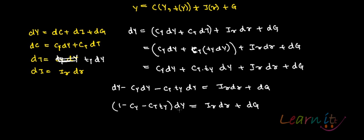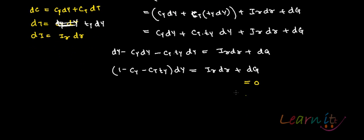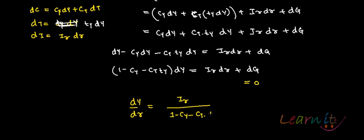Now, to find how y changes when r changes, set dG = 0. What remains is (1 - C_y - C_t·t_y) dy = I_r dr, so dy/dr = I_r / (1 - C_y - C_t·t_y).